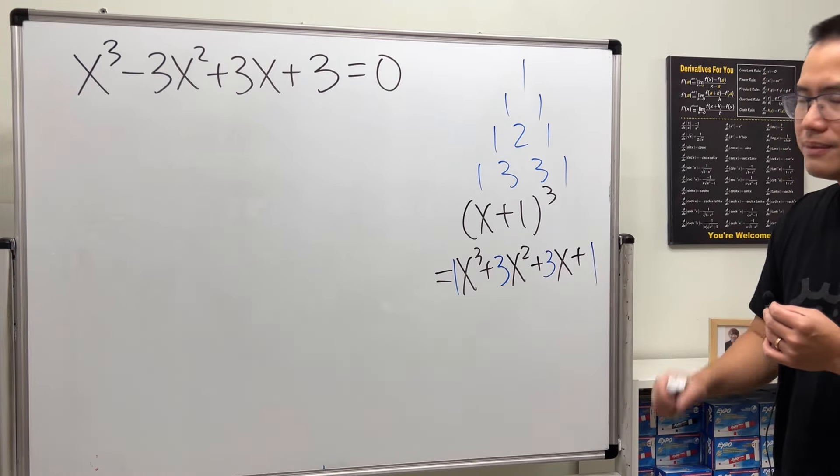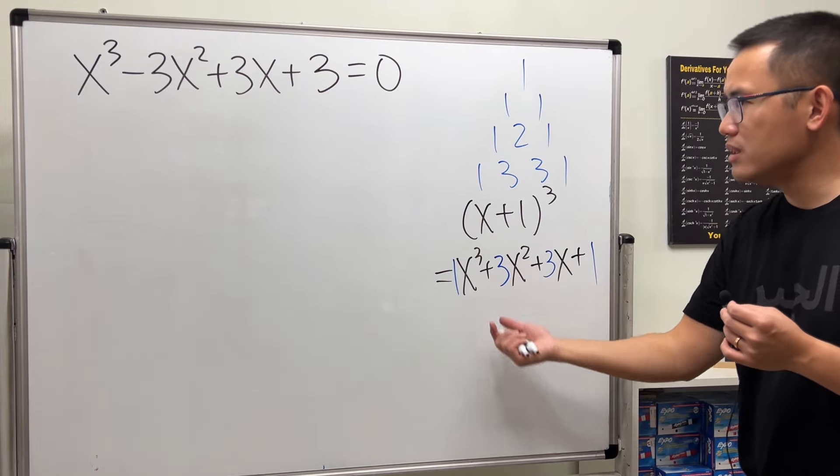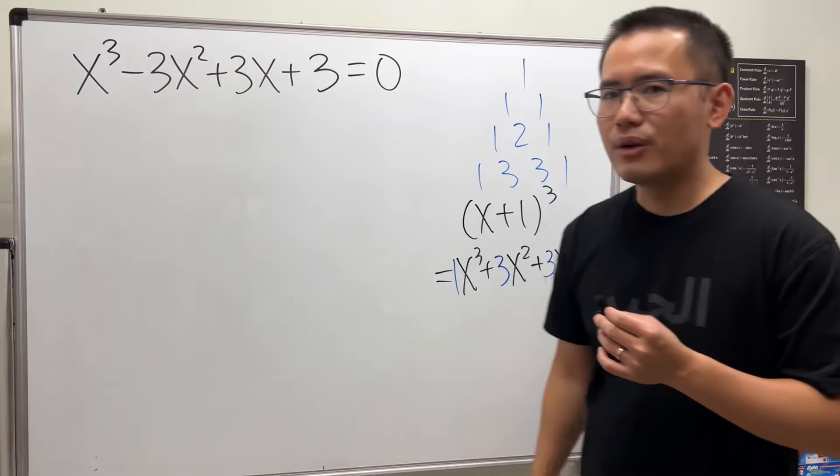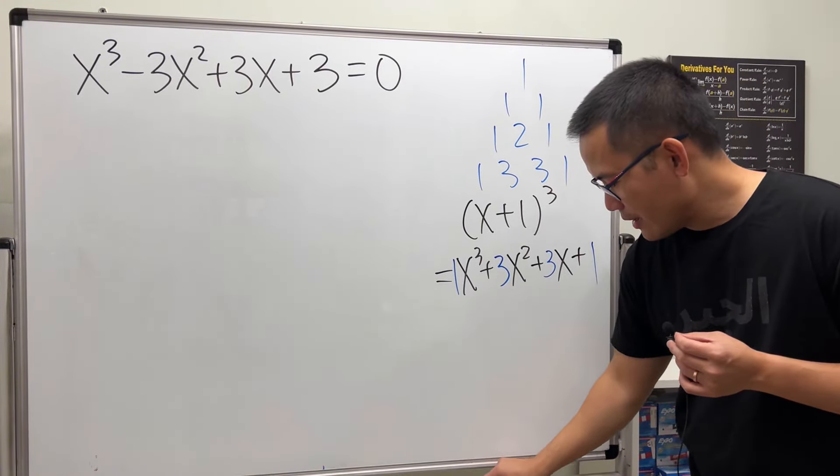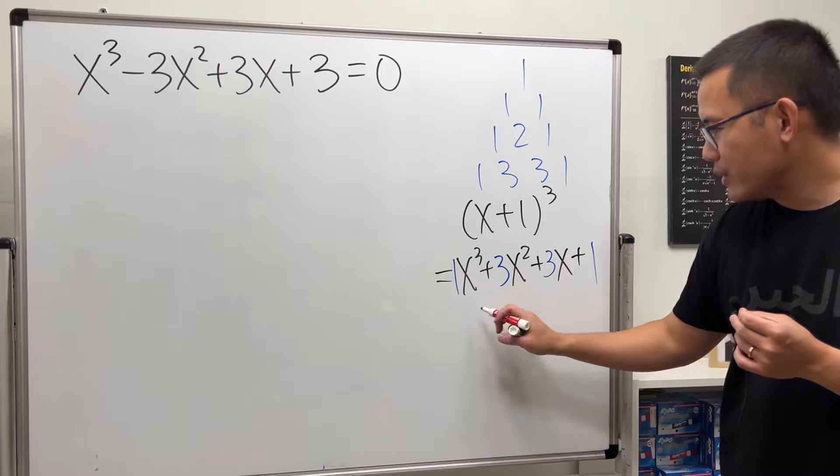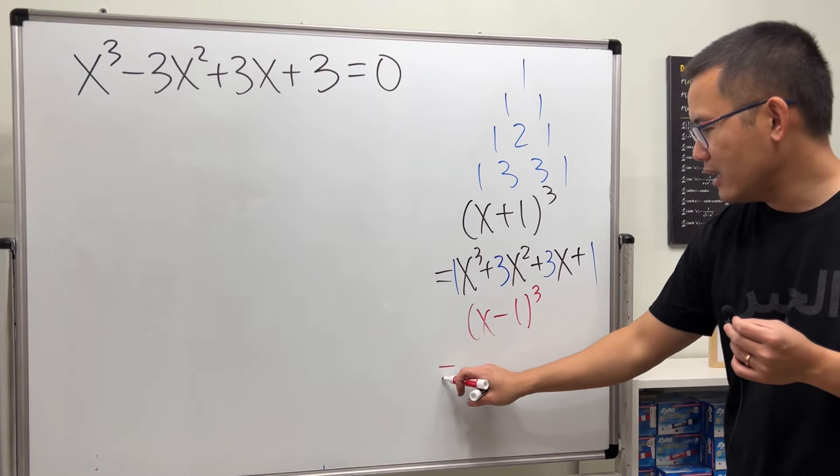But now you're thinking this is positive 3 here, we have negative though. Don't worry, why don't we look at this as (x-1)³? In that case...